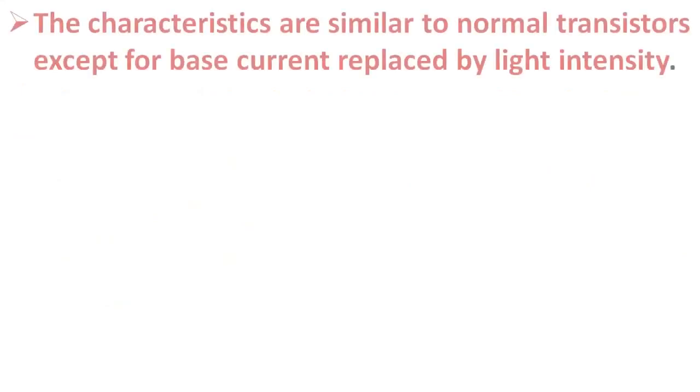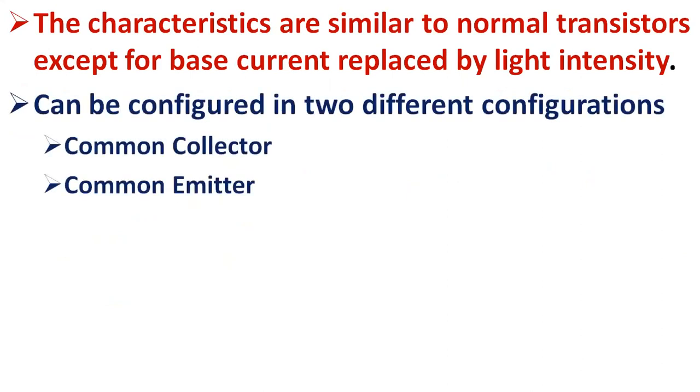The characteristics of phototransistors are similar to those of normal transistors, except that base current is replaced by light intensity. This means that even these devices have three operating regions: cutoff, active, and saturation, like normal transistors. This further implies that the phototransistors can be used for either switching or amplification, just like ordinary transistors.